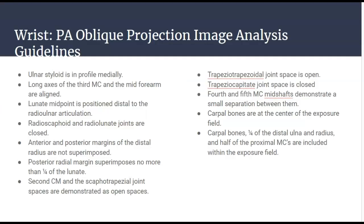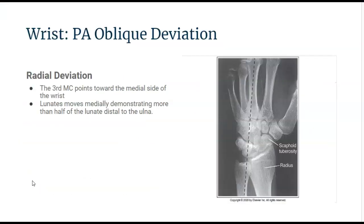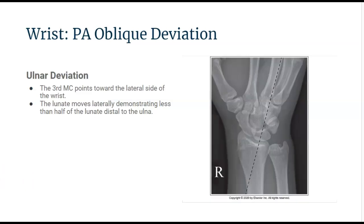Just like in the PA projection, the wrist may tend to deviate, and we want to reduce that deviation to get a true PA oblique projection. Radial deviation occurs when the third metacarpal points toward the medial side of the wrist, moving the lunate medially so more than half of the lunate is distal to the ulna. Ulnar deviation occurs when the third metacarpal points toward the lateral side of the wrist, moving the lunate laterally so less than half of the lunate is distal to the ulna.